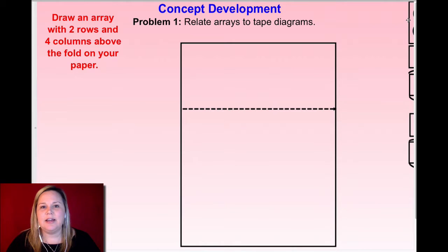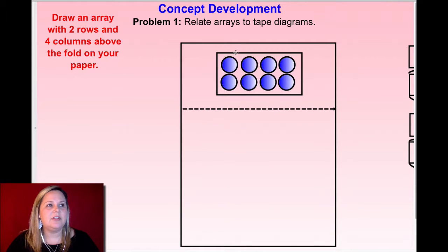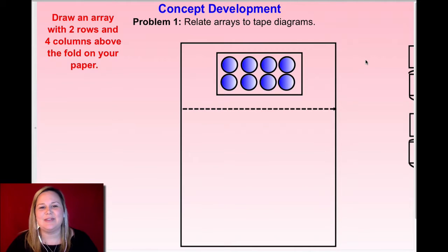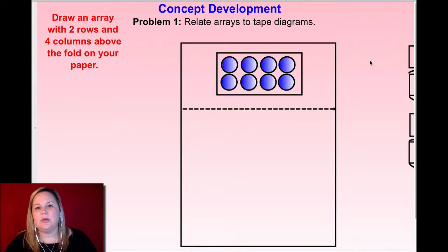Alright friends, here is my array — two rows with four columns. Now remember, you can turn these. Right now I'm showing one way you could write this, and if I turned it 90 degrees it gives you another multiplication problem you can use to find the product. The factors can switch places or trade meanings whether they're rows or groups, but the total is always going to stay the same. Now I would like for you to write the two multiplication expressions that match this array — when you have it facing up and when you turn it to the side.